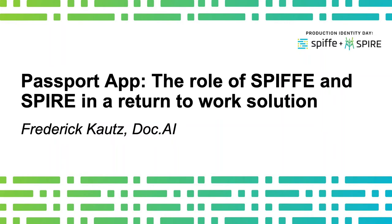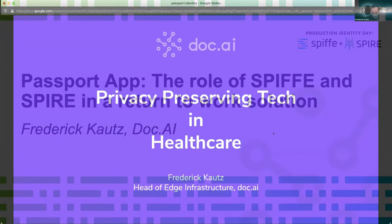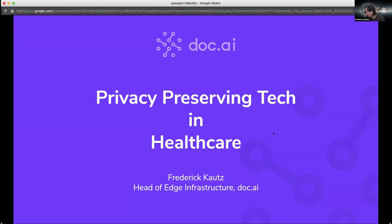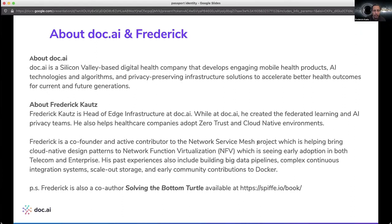I'm going to go over two things. One of them is talk a little bit about privacy, and the second one is I'm going to talk about one of the products that is architected to use specifically Spire and some of the things that we're doing with privacy there as well. A little bit about me and DocAI. DocAI is a company — we build mobile health products, AI technology and algorithms, and platform-preserving infrastructure.